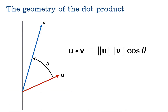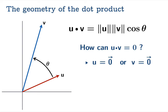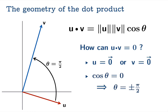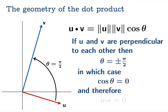This is the big punchline: u·v equals the length of u times the length of v times the cosine of the angle between them. How can u·v be zero? If either vector is the zero vector, that's a trivial case. More interestingly, cos θ = 0 means θ = ±π/2 — a right angle — meaning u and v are perpendicular. The converse is also true: if u and v are perpendicular, cos θ = 0 and u·v = 0. So for non-zero vectors, u·v = 0 if and only if u and v are perpendicular.